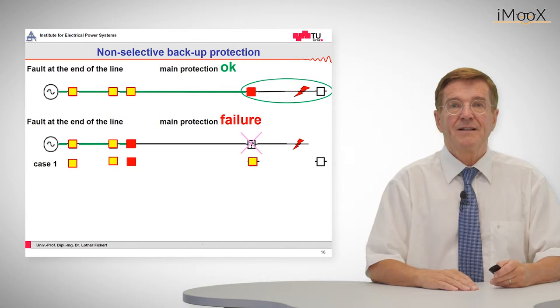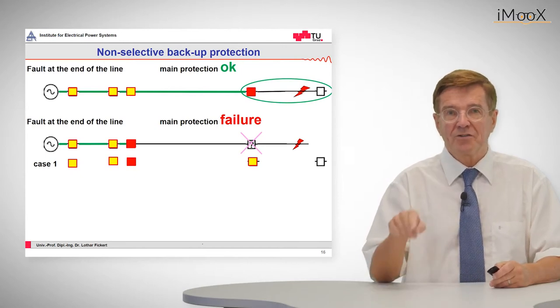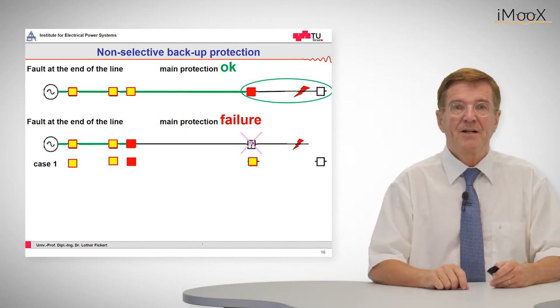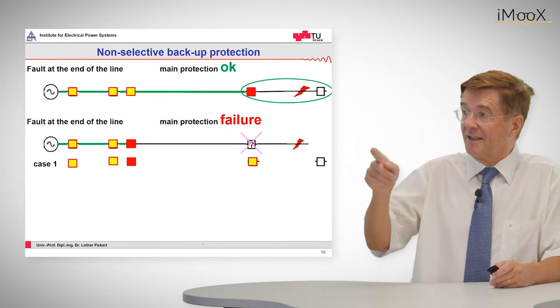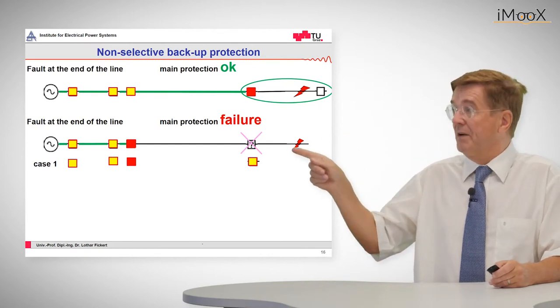So now let's see in case one that the relay will pick up but not trip that circuit breaker. We have an indication like pick up, pick up, trip, pick up.